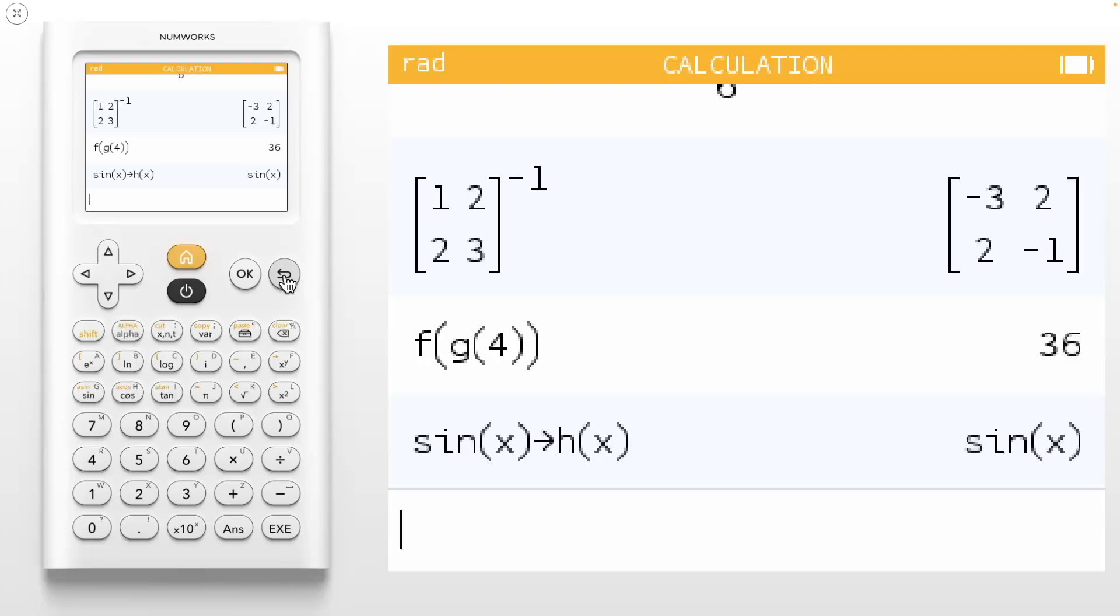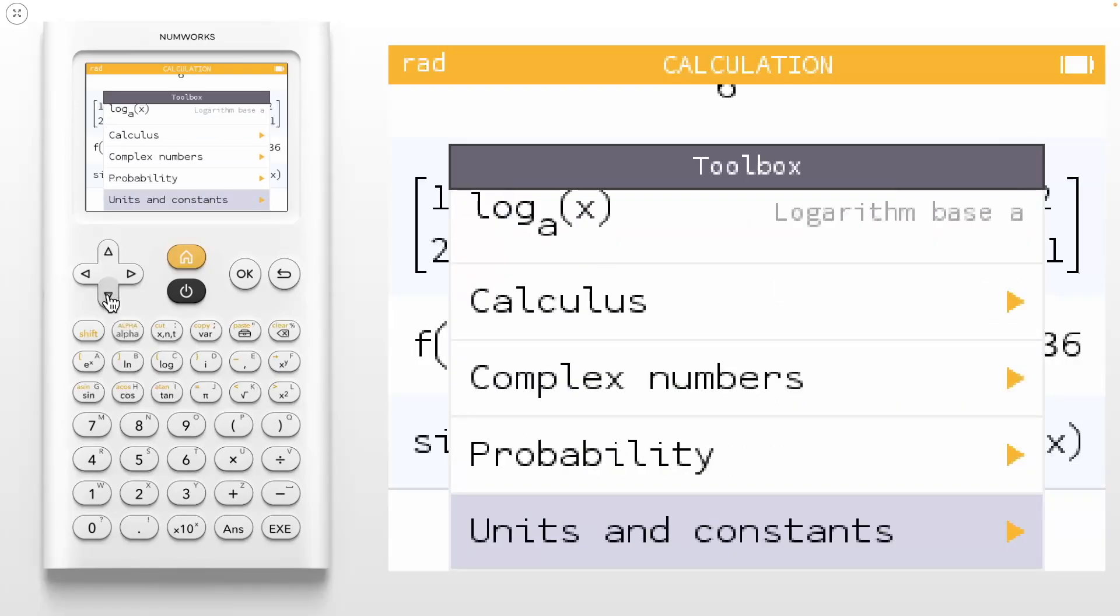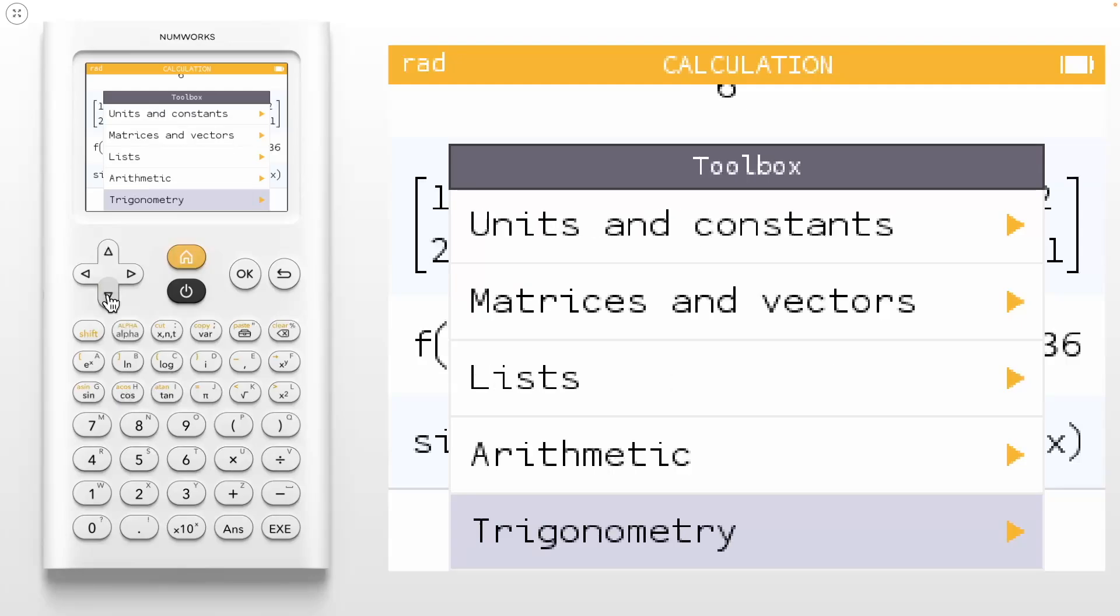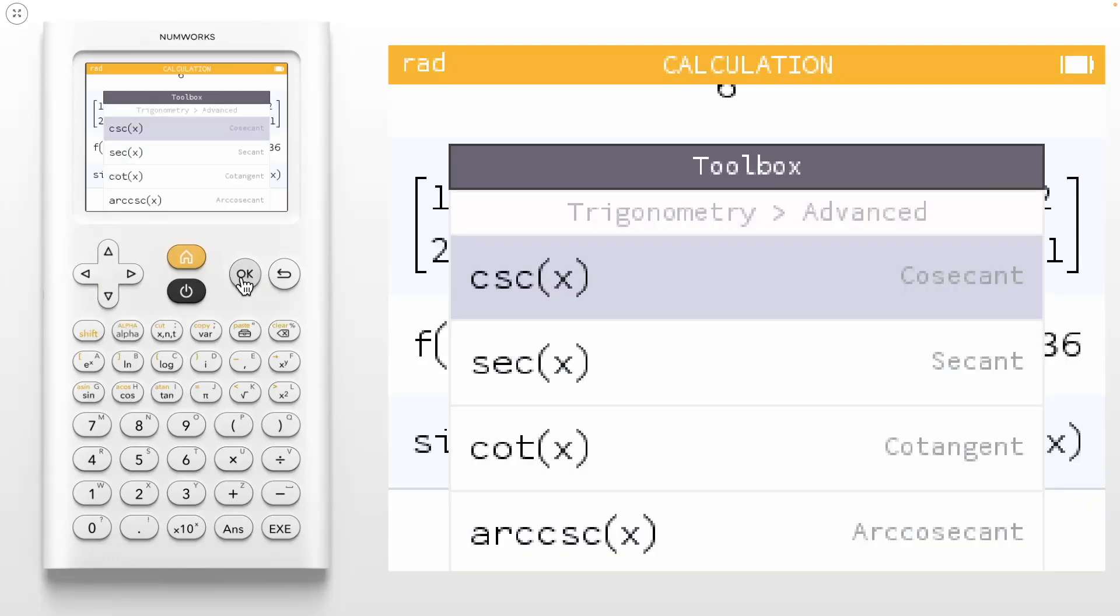The toolbox key houses all the other operations you'll need that are not directly on the keyboard. If we press the toolbox key directly under the OK button, you'll find the absolute value, nth root, and log base a operations, as well as additional operations that are organized in convenient categories like calculus and probability. Additionally, trig functions can be found in the toolbox. Let's navigate down to trigonometry. Here in the advanced section, we can locate the reciprocal trig functions as well as their inverses.